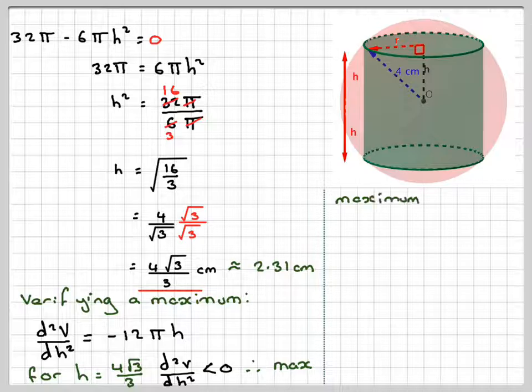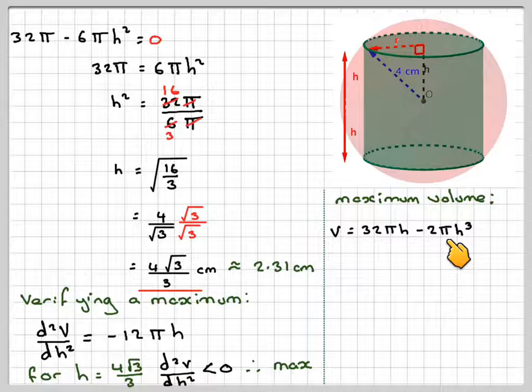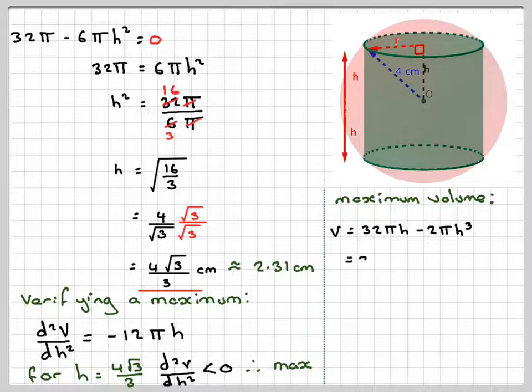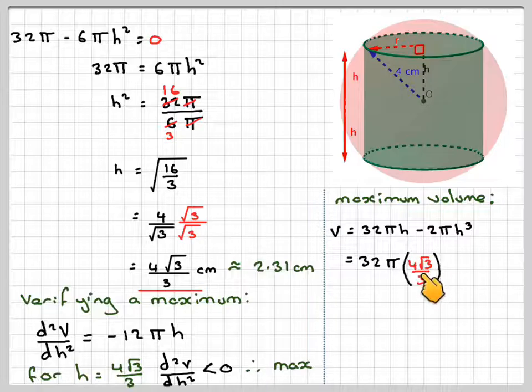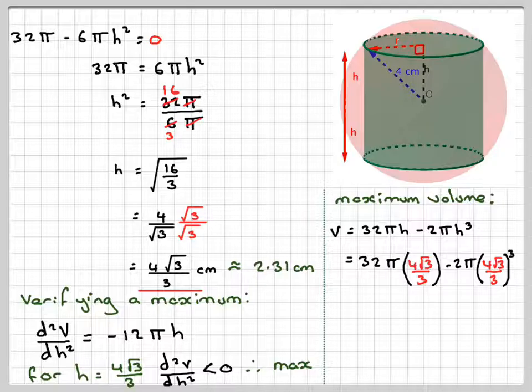Now in order to find the maximum volume, we now take our value of h and substitute it into here, into v, 32π h minus 2π h cubed. So putting it in, we can put it in the exact form. And on our calculator we can use the exact form as well.